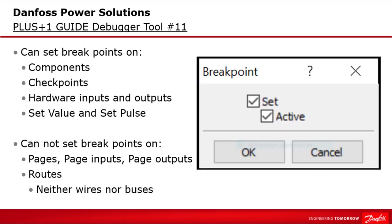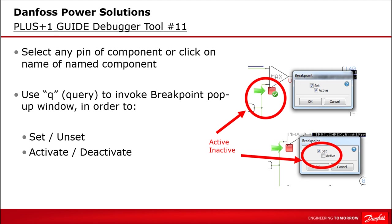Let's take a look at the debugger breakpoint window, which is displayed when you query a component during debugging mode and is used to set and make active breakpoints. You can set breakpoints on components, checkpoints, hardware inputs and outputs, set value and set pulls. Breakpoints cannot be set on pages, page inputs and outputs, and any routes like buses. To open the breakpoint window: during running debugging mode, navigate to a point in the code, press Q (query), then click and drag on the component to open the breakpoint window.